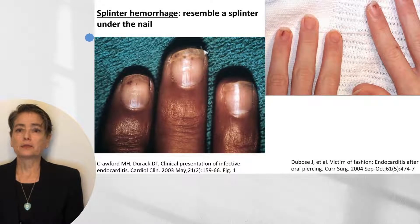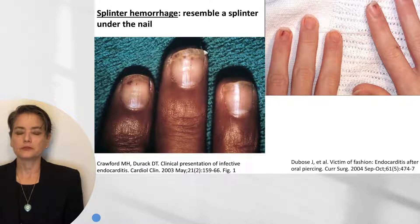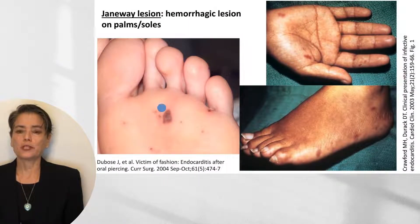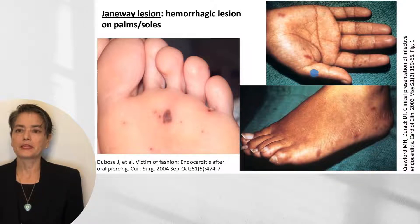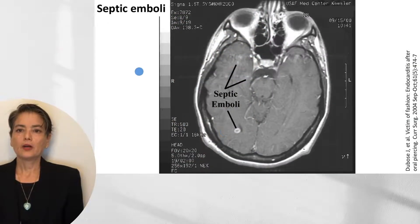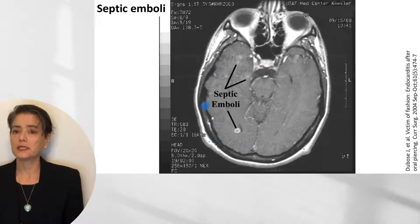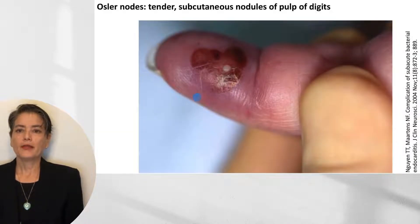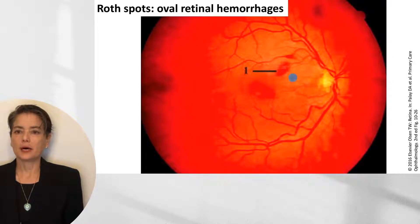Splinter hemorrhages are named because they resemble a splinter under the nail — examples are shown here in both lighter and darker skin tones. Janeway lesions appear as hemorrhagic lesions on the palms or soles, and in darker skin types they can look almost like tiny bruises. Septic emboli can have a profound effect — a patient with undiagnosed infective endocarditis may present with stroke-like symptoms. Osler nodes are tender subcutaneous nodules in the pulp of the digits. Roth spots are oval retinal hemorrhages caused by tiny emboli.